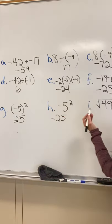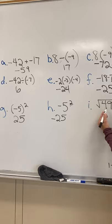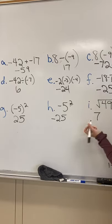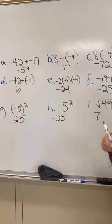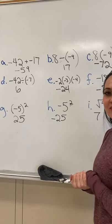And last one, I: the square root of 49 is 7. It's just asking what times itself gives you 49. 7 times 7 is 49. So hopefully that helped you with 1-7.